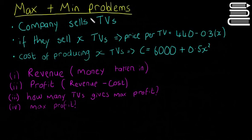So there's a company that sells TVs. If they sell x TVs, then the price for buying a TV is going to be 440 minus 0.3x. This is what we're given. Also, the cost of producing x TVs is equal to 6,000 plus 0.5x squared.